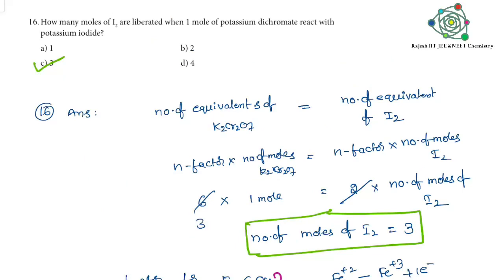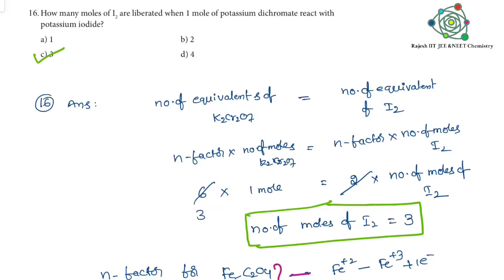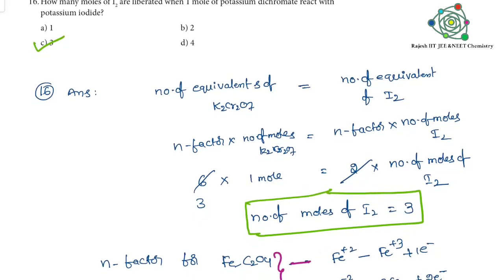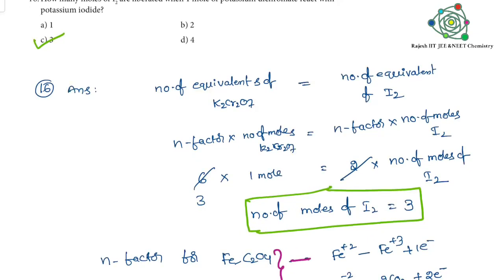Now same model for this 16th question. Same formula: number of equivalents of K2Cr2O7 equals number of equivalents of I2. So n-factor times number of moles. Here n-factor for K2Cr2O7 is 6 and 1 mole is given, n-factor for I2 is 2. How to calculate it we will discuss later. Number of moles of I2 equals 3. What a simple technique. We can follow this while solving such problems in objective examinations, time-saving process.